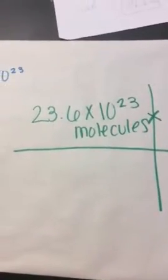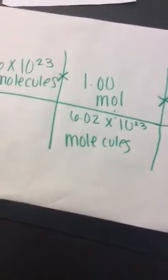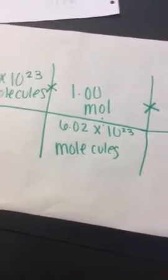Okay, so you take 23.6 times 10 to the 23rd molecules, and then 1 mole on the top, and then 6.02 times 10 to the 23rd, because that was given.